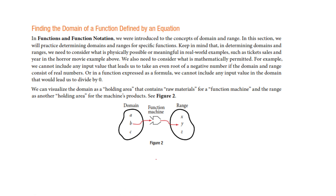Here's our machine. The domain are the things that go in the machine — I like to think of it as a conveyor belt with a little machine there. Things are going in from the domain, coming out as the range.